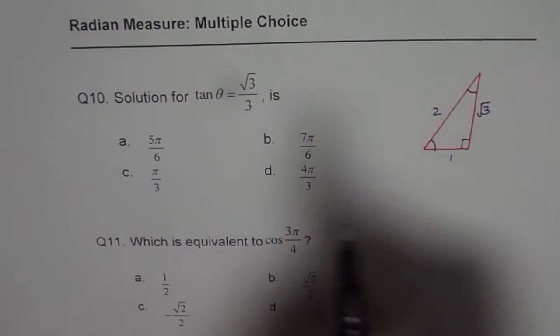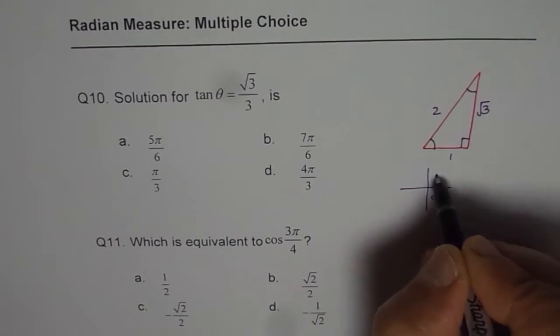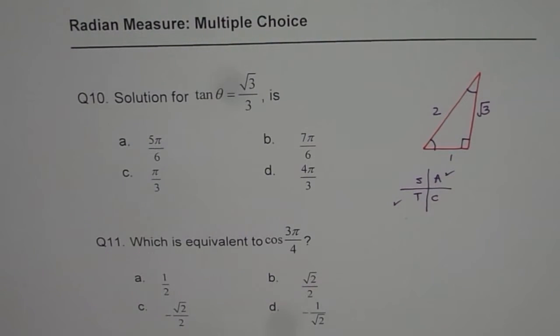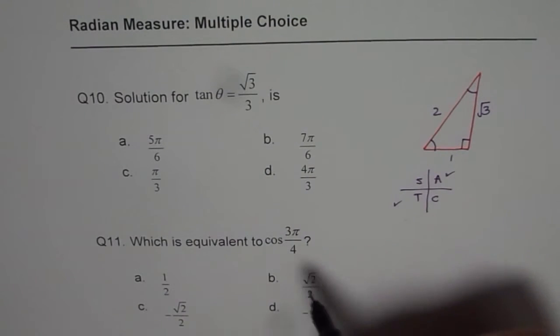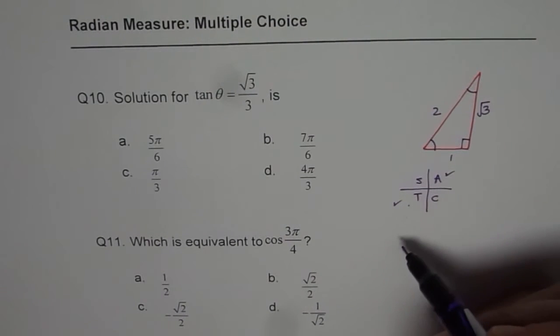Now tan θ is positive. If tan θ is positive, as per the CAST rule, we could be in quadrant 3 or in quadrant 1. So that is also helpful to figure out which is the right choice. The angle should be either in quadrant 3 or in quadrant 1.